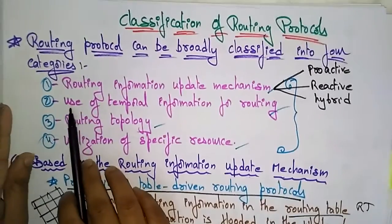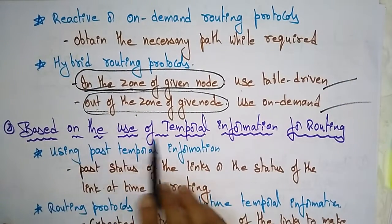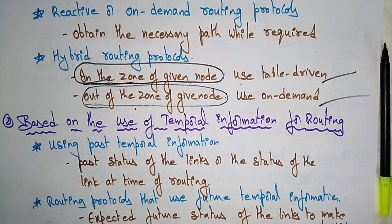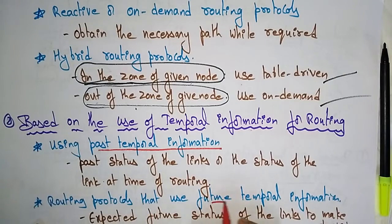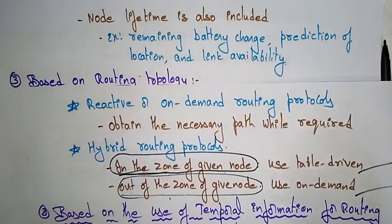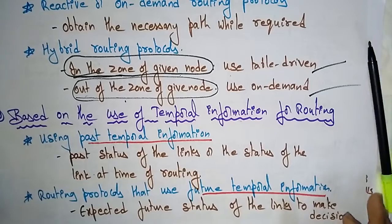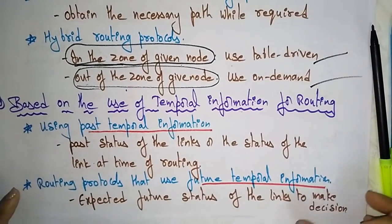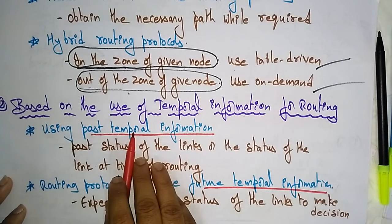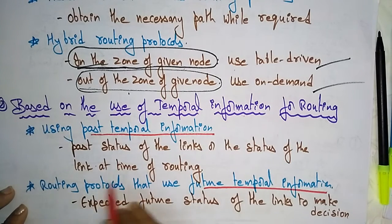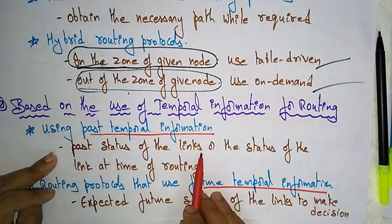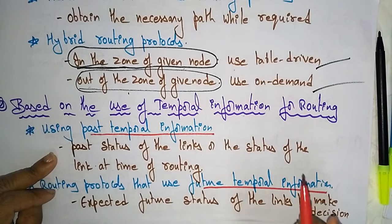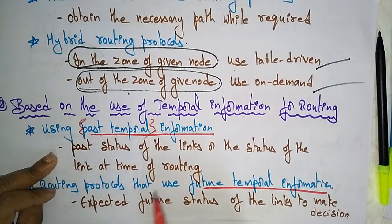Now coming to the second classification: based on the use of temporal information for routing. There are three techniques here. The first uses past temporal information — the past status of the links, or the status of the link at a given time, is considered while selecting links for routing. This is one approach.